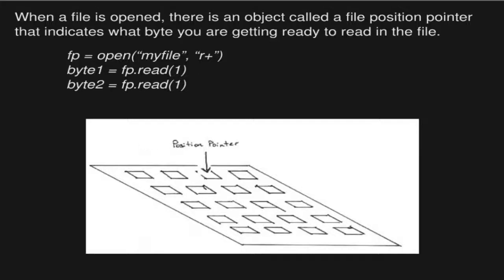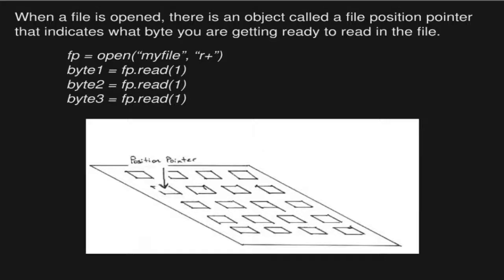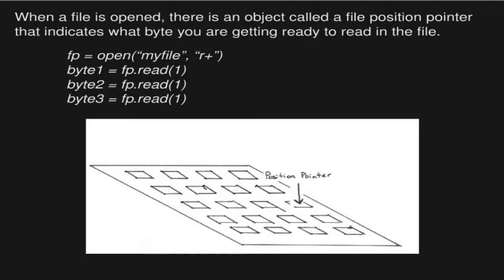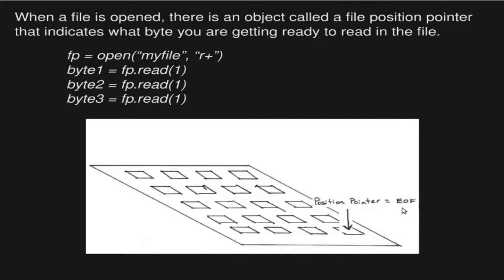And if I make another read, it moves down another byte, another read moves it down another byte, and so on. As I move down through this file, my file pointer is gradually incrementing all the way down, reading until I get to the very last byte. Eventually if I try to read another one, it's going to tell me that I have reached the EOF — end of file. So now my position pointer is at the end of file, and I've read all of the bytes in my file.